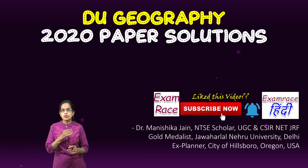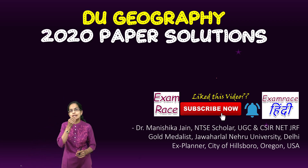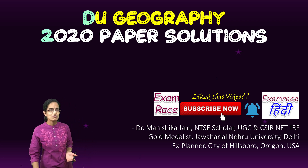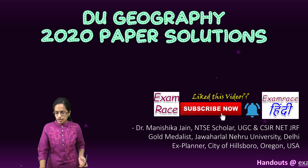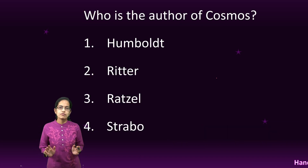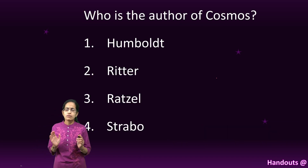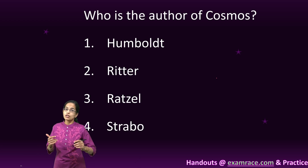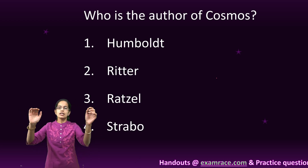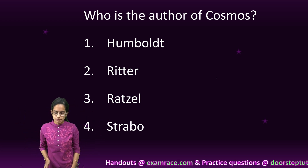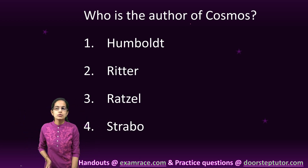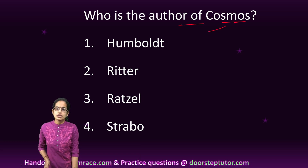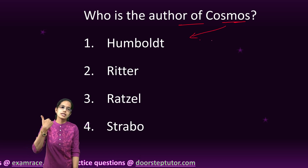Let's begin solving some of the questions from the Delhi University entrance examination for Geography 2020 paper. The questions were very direct and fundamental from what you have been studying in your bachelors. Some were very simple — for example, who is the author of Cosmos? The direct answer is Humboldt.